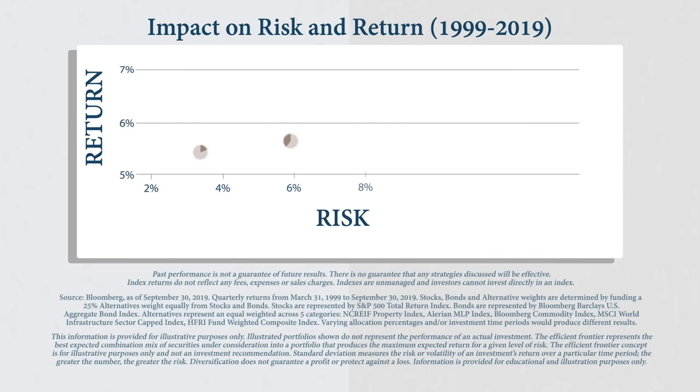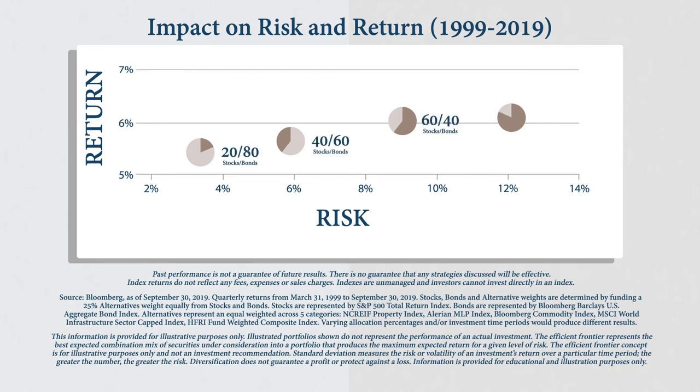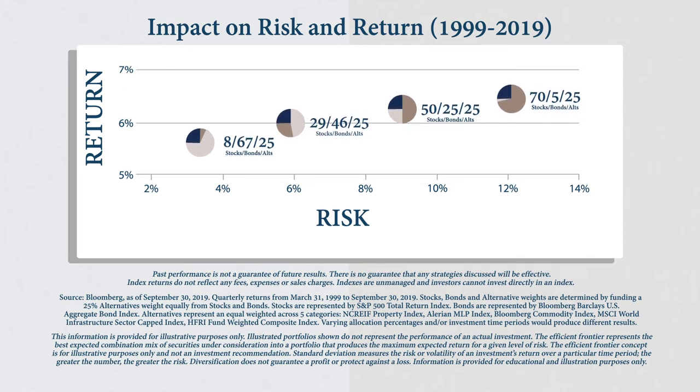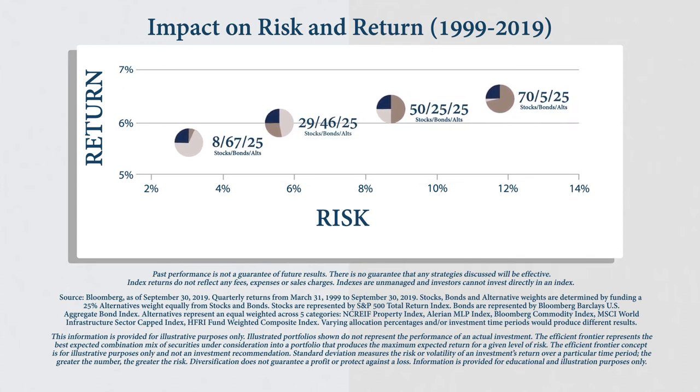Here you can see the risk return attributes of several historical portfolios made up of varying amounts of traditional stocks and bonds. When 25% of alternative investments were added to each portfolio, it enhanced the asset allocation, increased returns, and reduced risk in each portfolio.